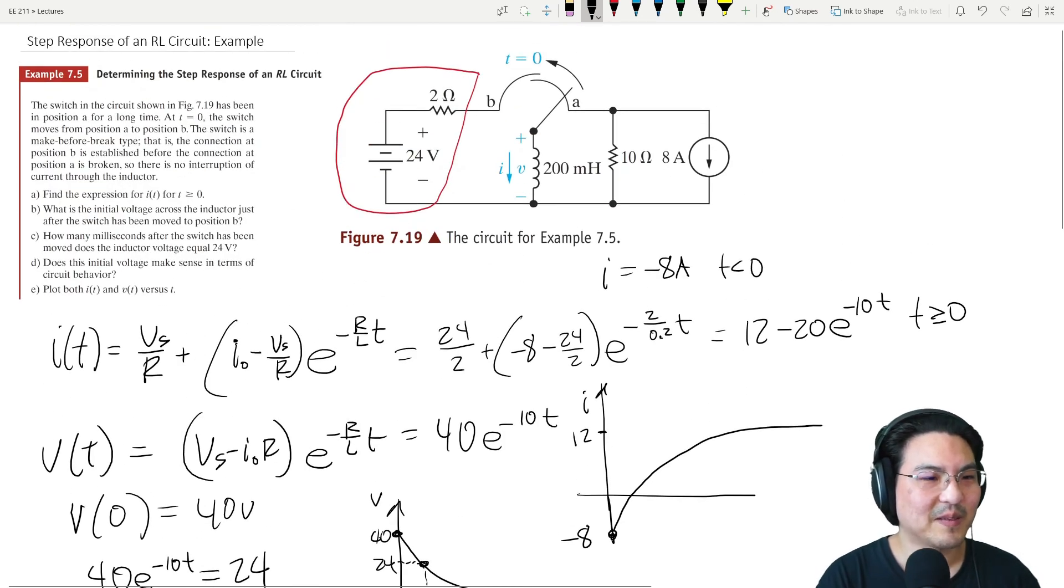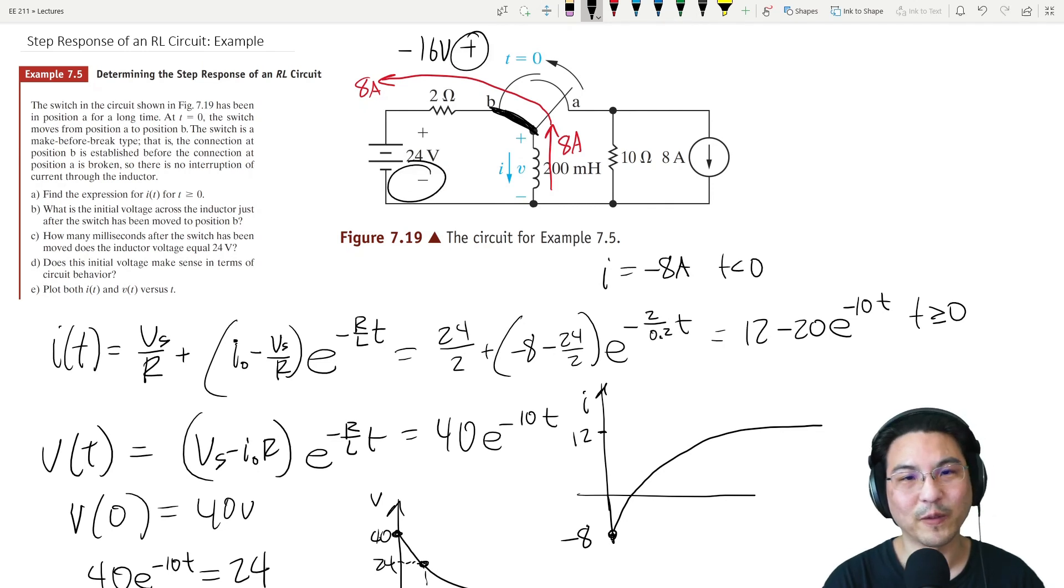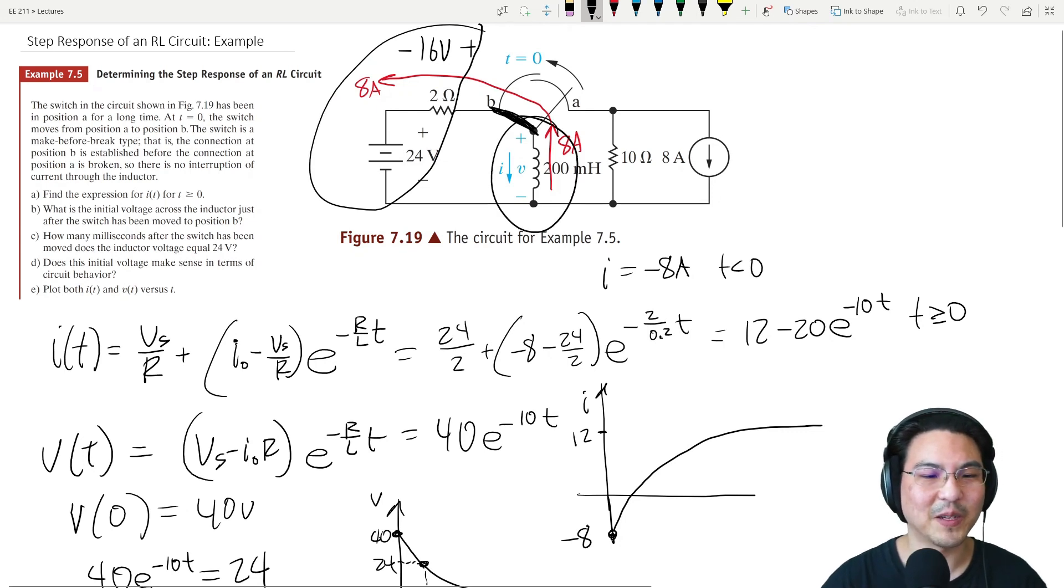Does that make sense? Let's take a look at the circuit over here. When we switch over, we have current right here, eight amps. This switch is here now, so that means we got eight amps going this way. What's the voltage across this resistor here? 16. And look, we got 16 volts here, 24 volts here, so from here to here that's 40 volts. Across the inductor we had 40 volts, so totally makes sense.